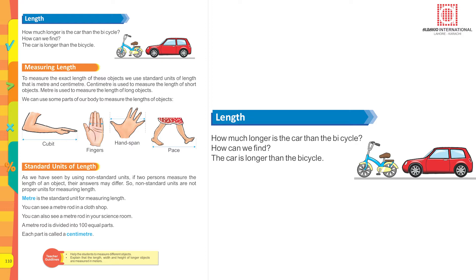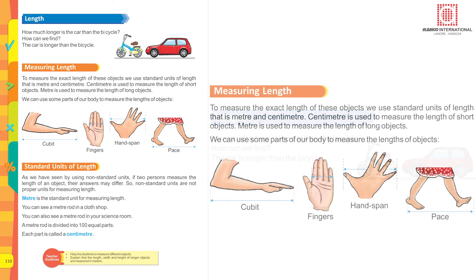Length: how much longer is the car than the bicycle? Look at the picture of a car and a bicycle and find out which is longer. Yes, absolutely correct — the car is longer than the bicycle. Now, how do we measure length? To measure the exact length of these objects we use standard units of length.